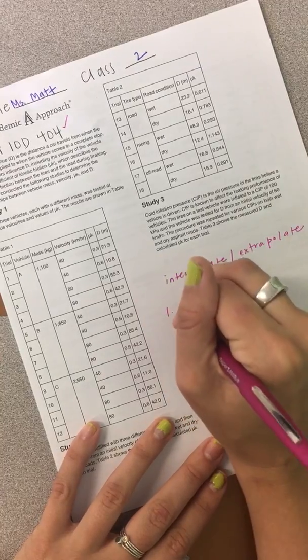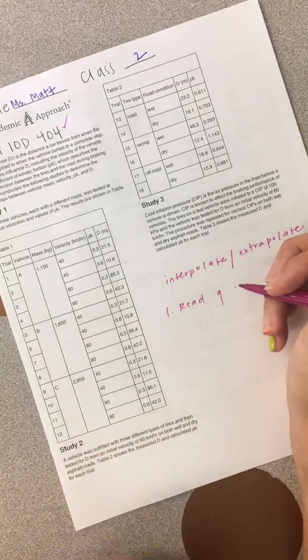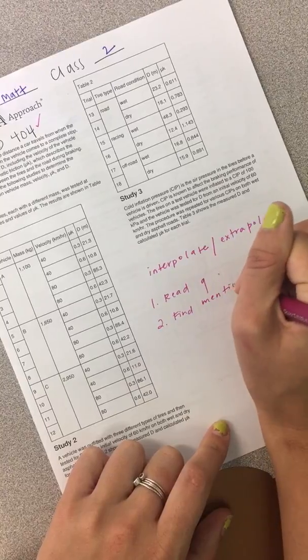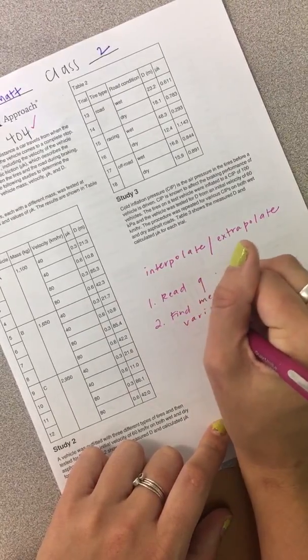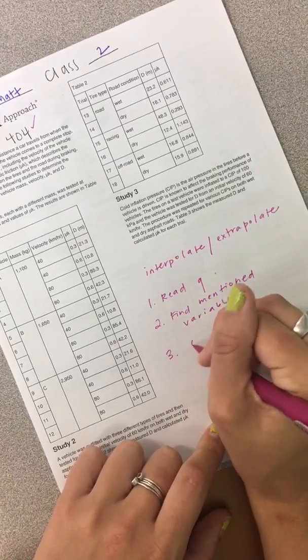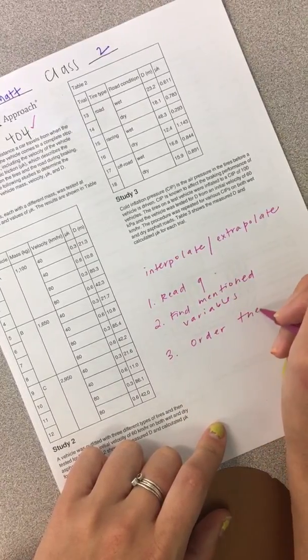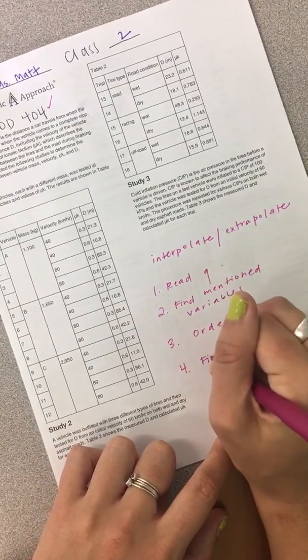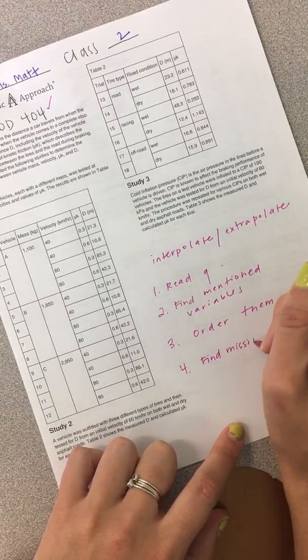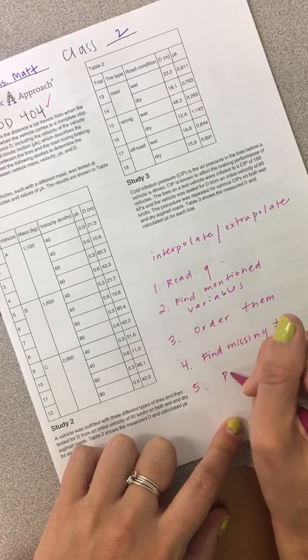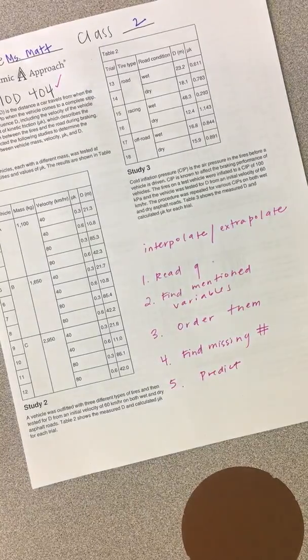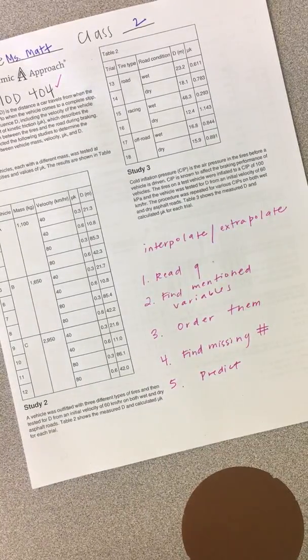So, what we do is we read the question, and then we find the mentioned variables. We order them—I'll explain what that means in a second. We order the variables, and then we find our missing number, and we predict. So, these steps are a little bit different than what you've been doing before. You still find the questions and go back to the passage, but now you have to do a little bit of math.